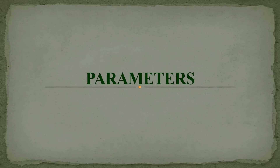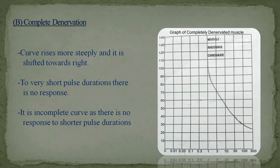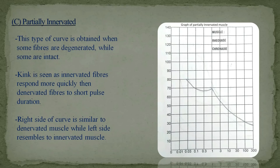Parameters from the SD curve graph: The graph of a normally innervated muscle is a straight line parallel to the x-axis, rising only for the last few pulse durations. The same strength of stimulus is required to produce a response at all longer pulse durations; shorter durations require increasing amplitude. It is a complete curve with response at all pulse durations. For a completely denervated muscle, the curve rises steeply and shifts to the right; it is an incomplete curve requiring increasing intensity for successively decreasing pulse durations, with no response to very short pulse durations.